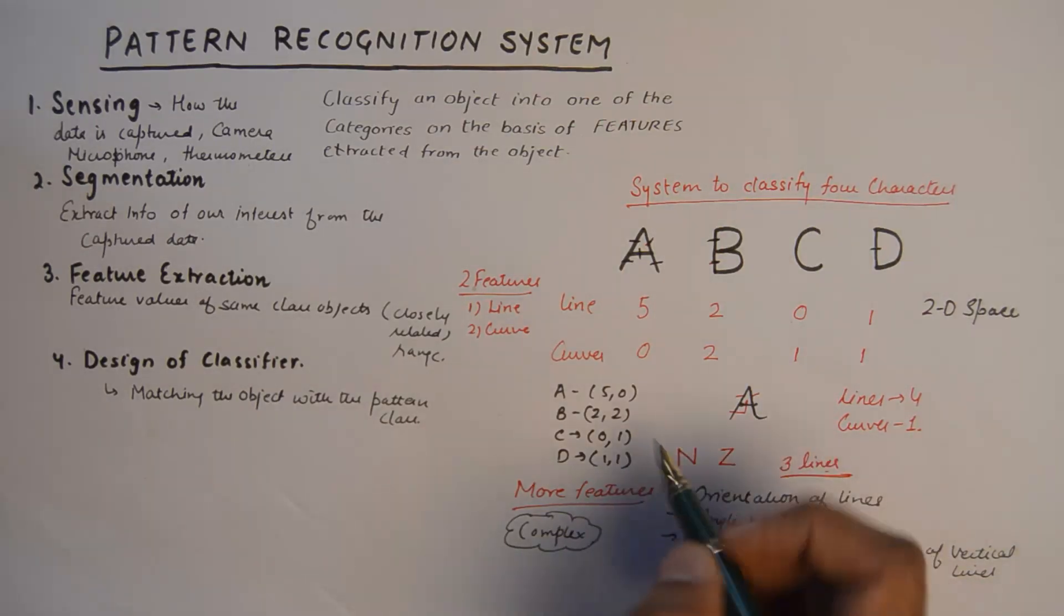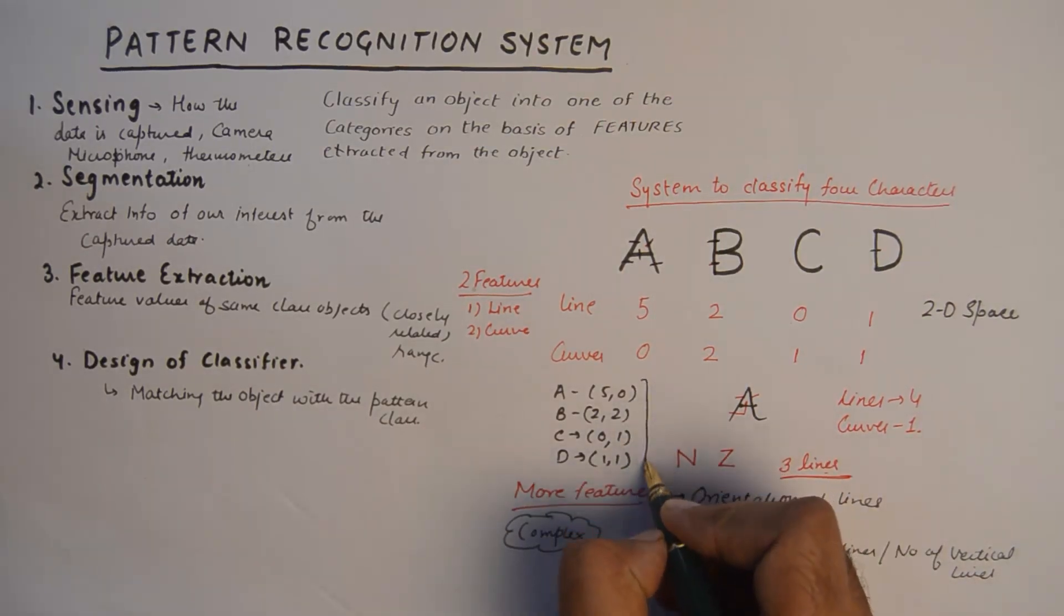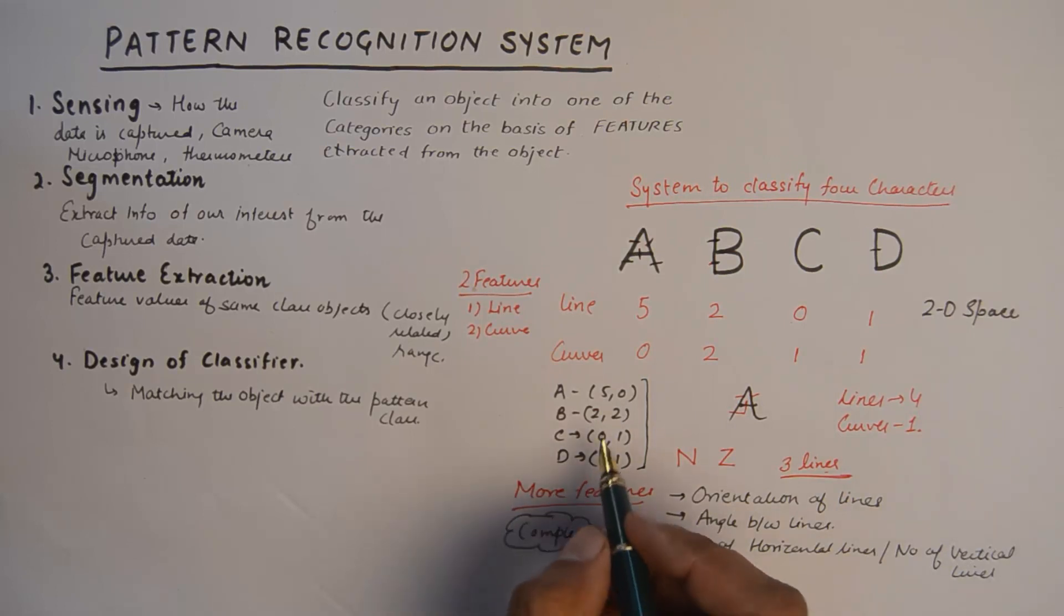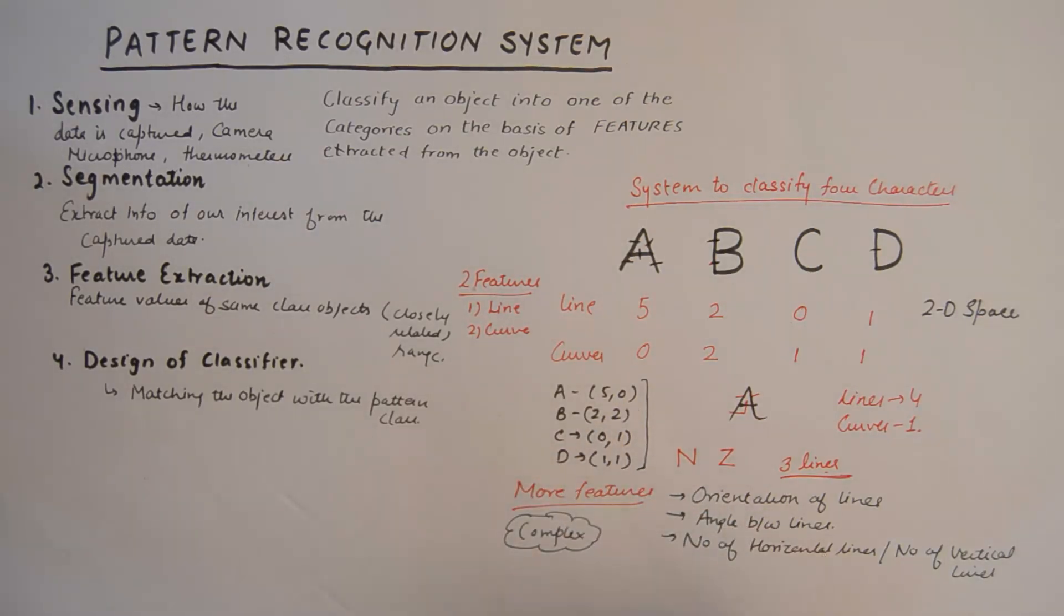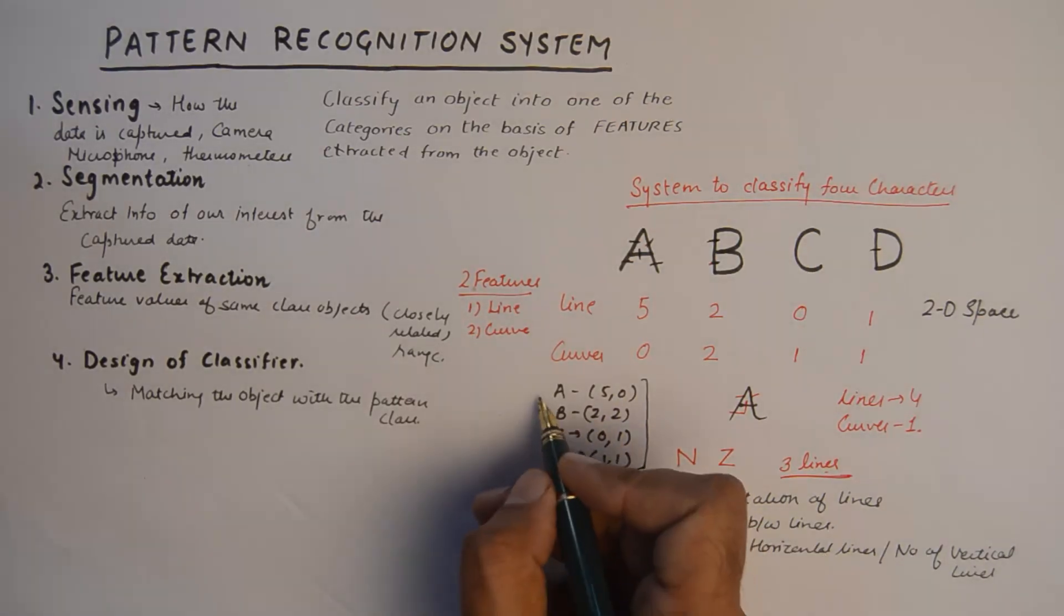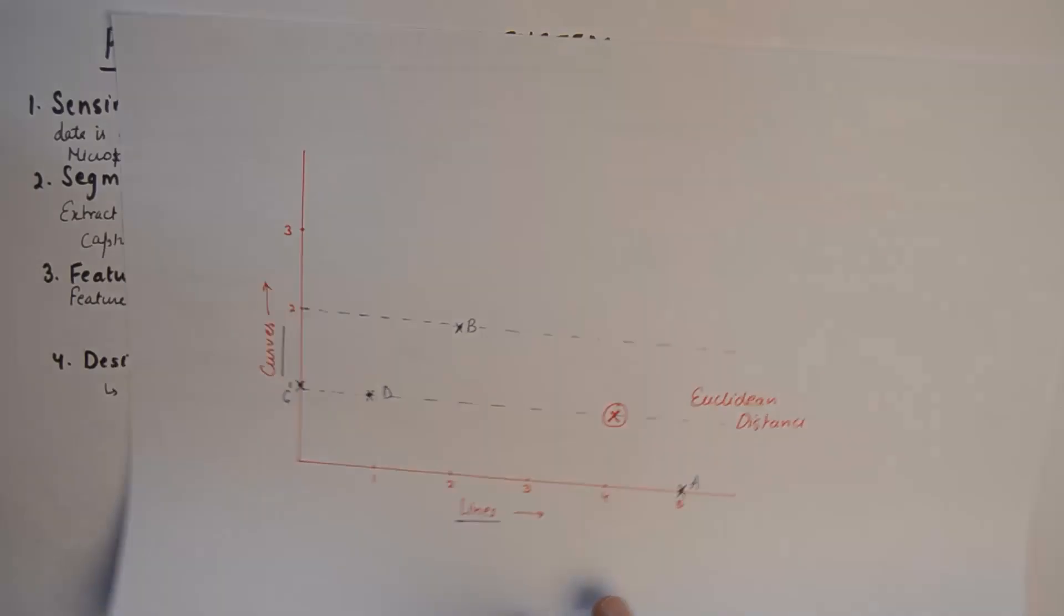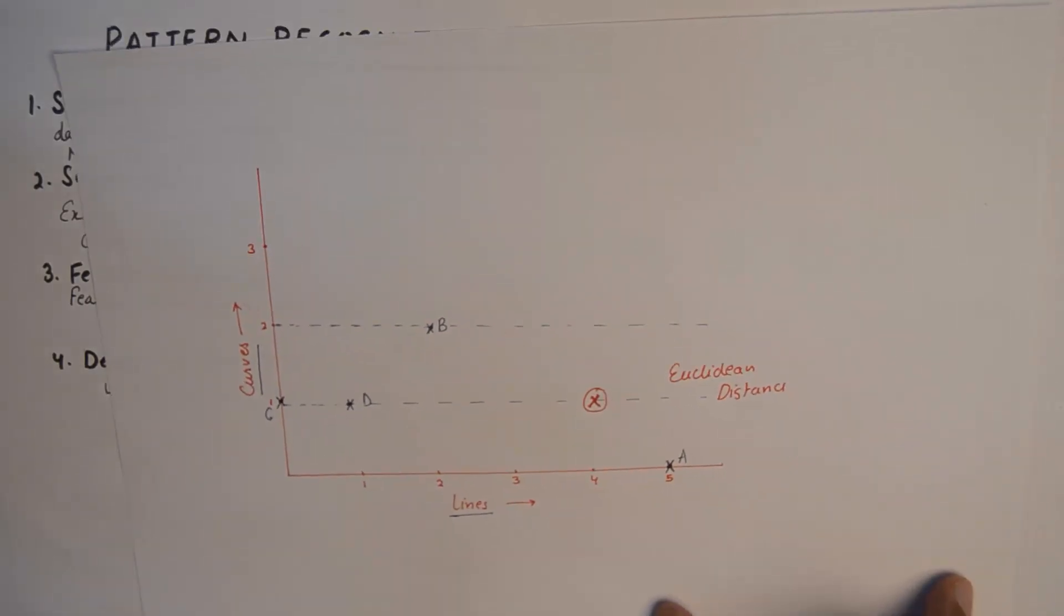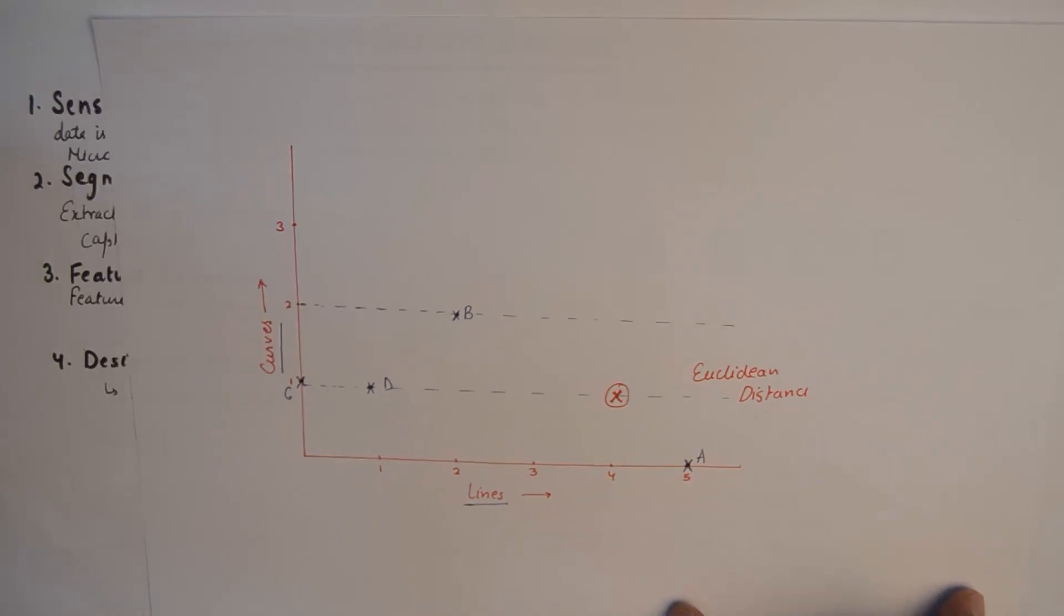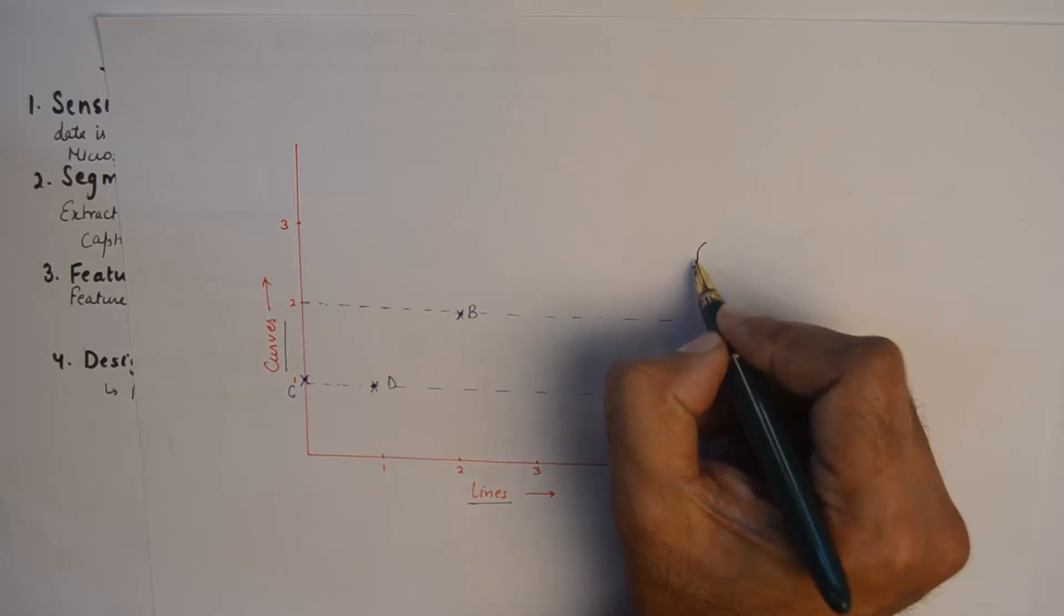Now this can be drawn in a two-dimensional space, and these features can be written like this as a 2D thing for each character. I've drawn this on a feature space—please understand, this is known as a feature space.